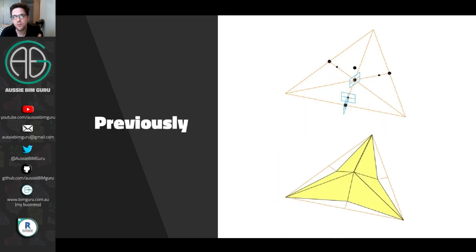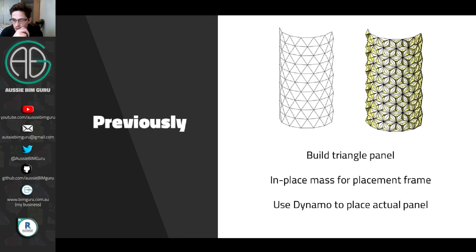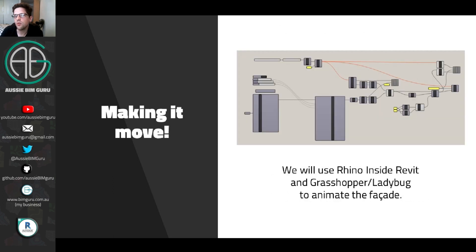Previously we looked at building an adaptive component — the base component for the facade itself — using an adaptive component that can open and close depending on the value of a parameter called open factor. We've already placed it on a conceptual mass using Dynamo, and now we're going to obtain all those panels in Rhino Inside, then populate the data back depending on how close they are to the sun angle. We'll be using Rhino Inside, Grasshopper, and Ladybug.